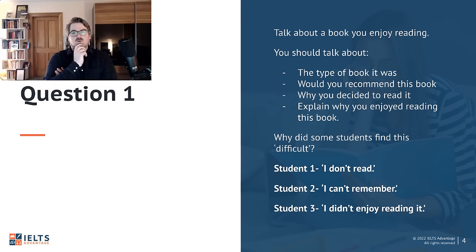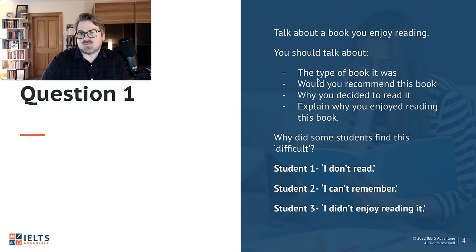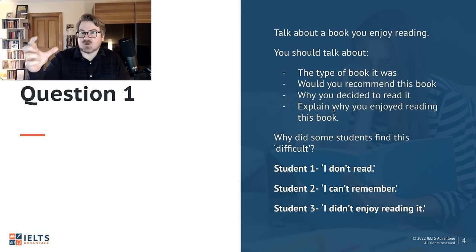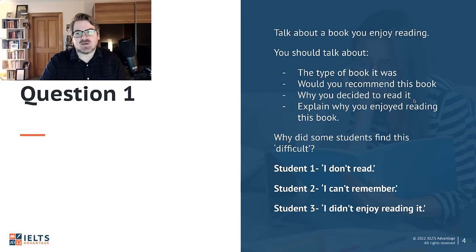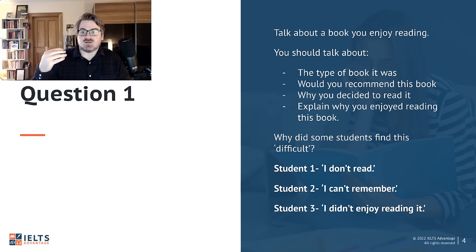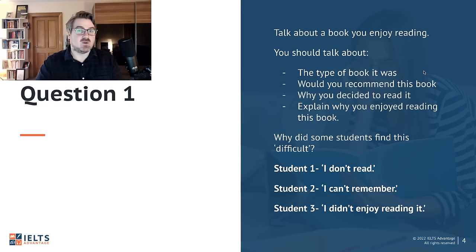What I did there was talk about the book but only really mentioned two bullet points — the type of book it was, and explaining why I enjoy reading it — because those two were the easiest for me to talk about. I could have talked about whether I'd recommend it, but that would have been very short. And I can't really remember why I decided to read it, so I didn't want to think too hard, because thinking too much can affect fluency. That demonstrates the strategy of just picking the bullet points you want to talk about.